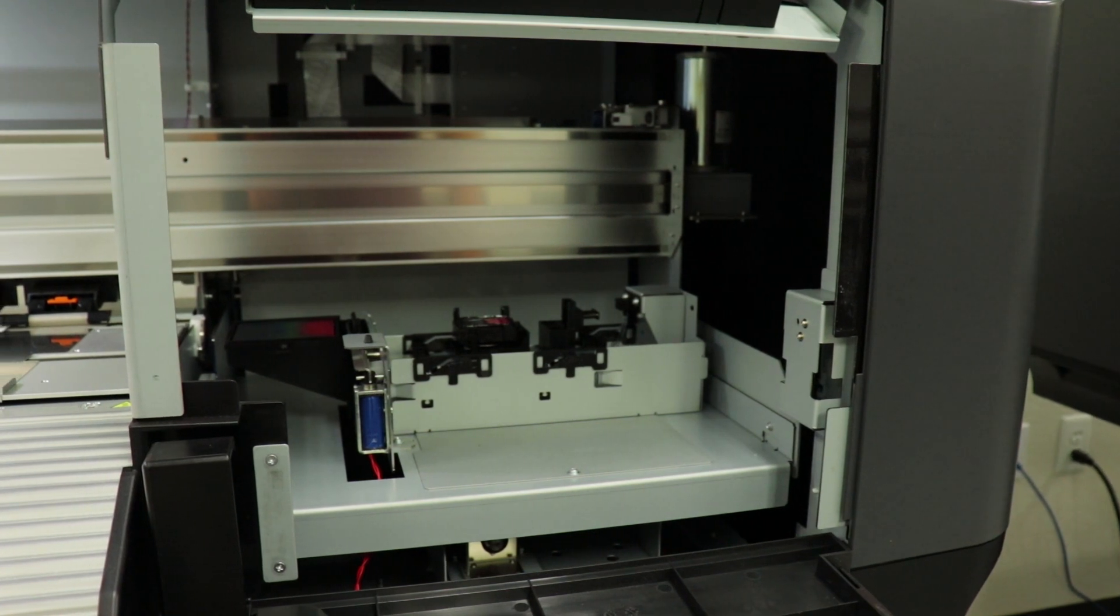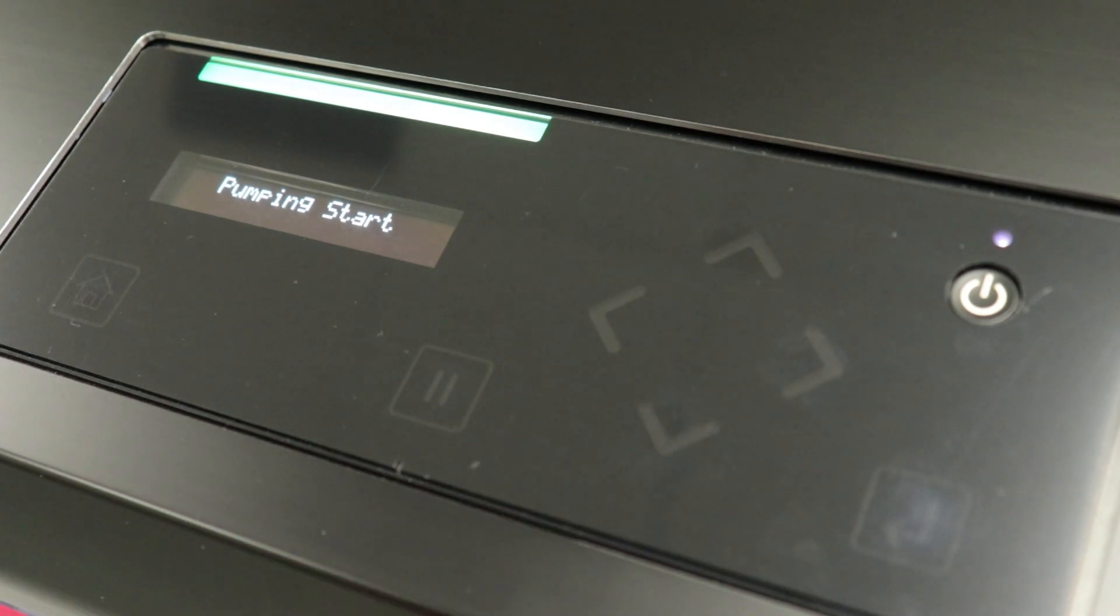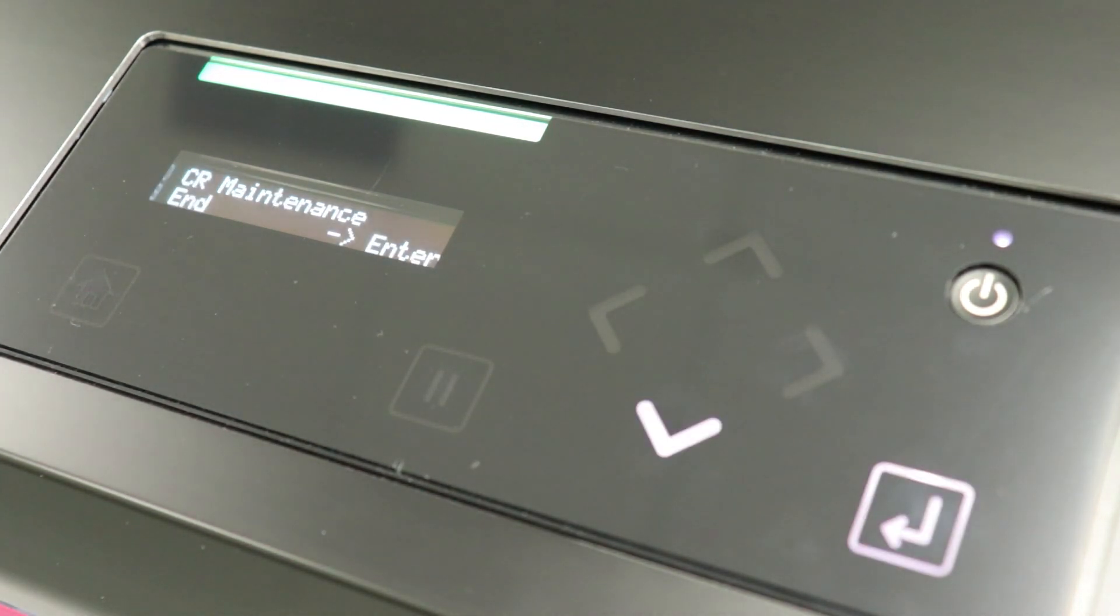Next, we're going to flush the cap, and you can do this by pressing the down arrow on the control panel while in CR maintenance. This will start the maintenance station pump.